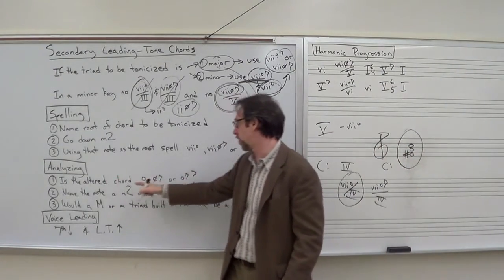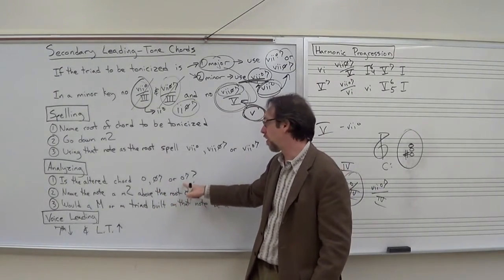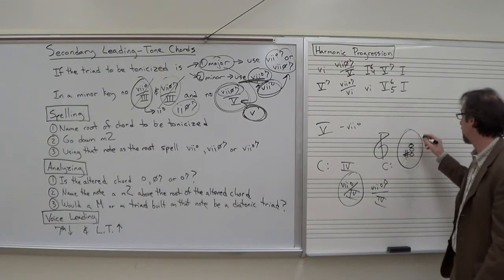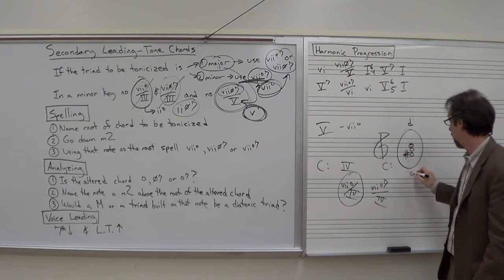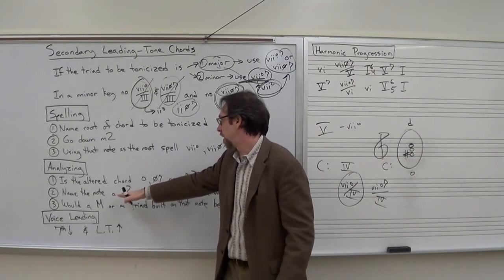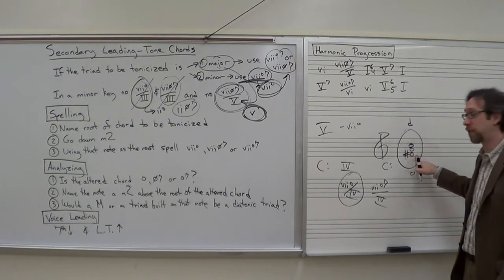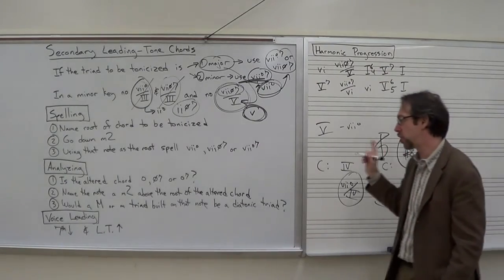We ask the question, is the altered chord a diminished triad, a half diminished 7 chord, or a fully diminished 7 chord? In this case, F sharp, A, C is a diminished triad. We then go to step 2. Name the note a minor second above the root of the altered chord. What's a half step above this F sharp? That would be G. So we now have the G.